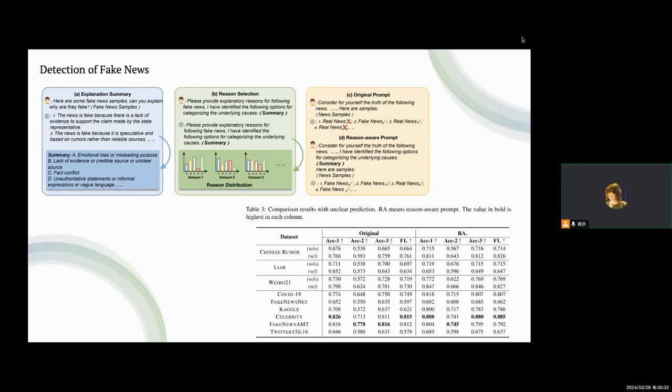Based on the explanation of fake news, we propose prompt methods to improve ChatGPT's detection ability of fake news. After injecting knowledge about the explanation summary or explanation reasons into the prompt, ChatGPT's fake news detection ability is improved significantly. Based on extensive experiments on different fake news datasets, we observe that this method works well.